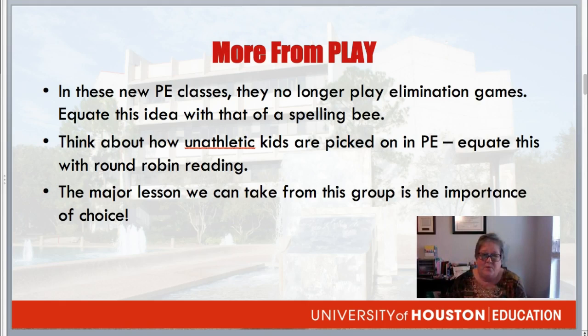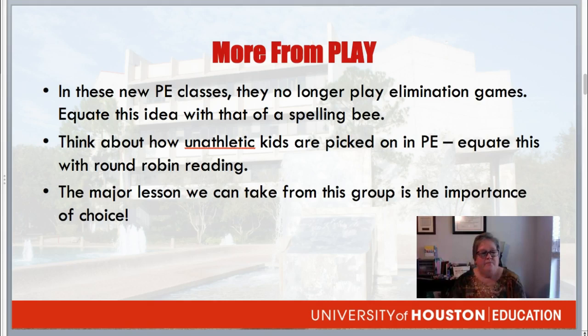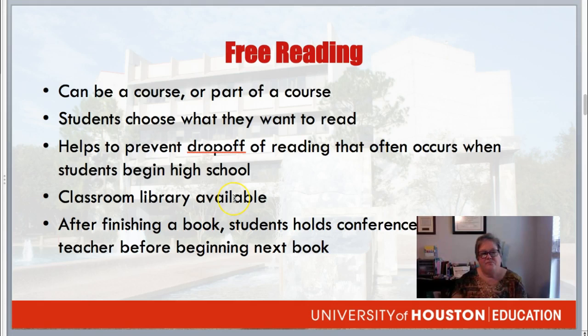In these new PE classes, they don't play elimination games because of what it does to student morale. We can equate this with the spelling bee — that's an elimination game, and maybe that's not the best use of our students' time. Think about how kids who are not athletic get picked on in PE — I was one of those kids. We can equate that with round-robin reading, where children take turns reading aloud, and think about the struggling reader who gets picked on. The major lesson here is the importance of choice.